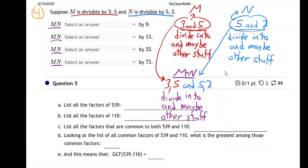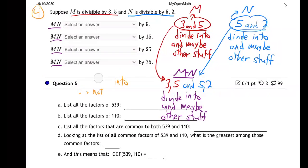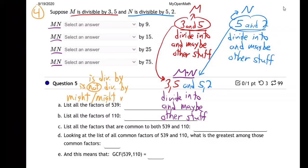Now when we get to the questions, the different options they're going to give us are: is divisible by, is not divisible by, and might or might not be divisible by. Those are the three options.